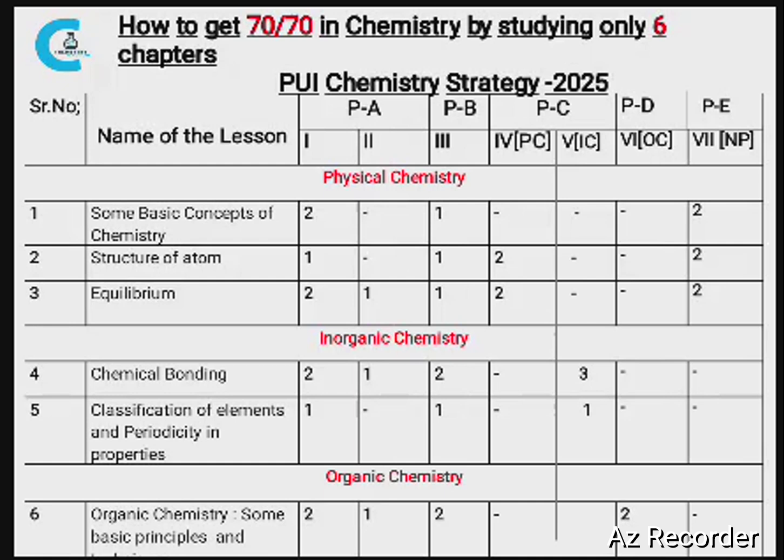In Part A, Roman numeral 1: 15 MCQs in total. Some Basic Concepts of Chemistry — 2 MCQs. Structure of Atom — 1 MCQ. Equilibrium — 2 MCQs. Chemical Bonding — 2 MCQs. Classification of Elements — 1 MCQ. Organic Chemistry — 2 MCQs. That covers the MCQs from these 6 chapters, totalling 10 out of 15.